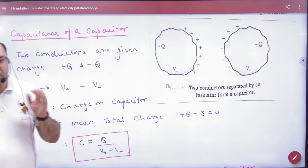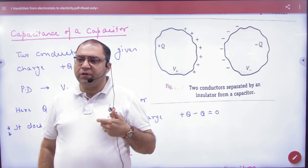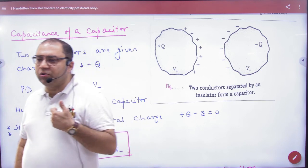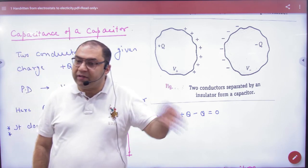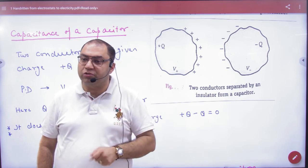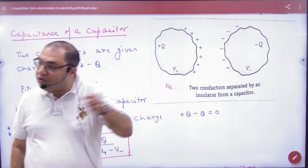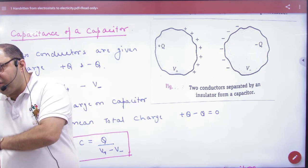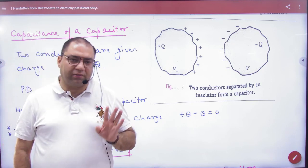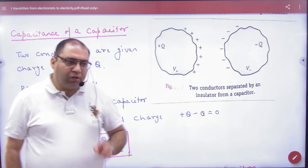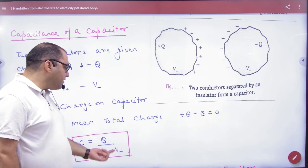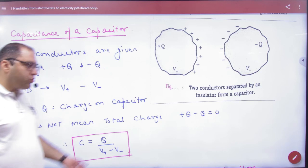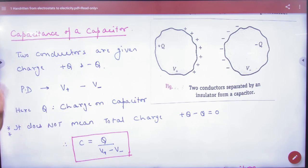If you have two bodies — one has 2V potential and the other has minus 10V potential — 2V is greater than minus 10V. Positive potential is always greater than negative. If we divide the charge by the potential difference, the ratio gives us the capacitance. This is the general formula to find the capacitance of any body.